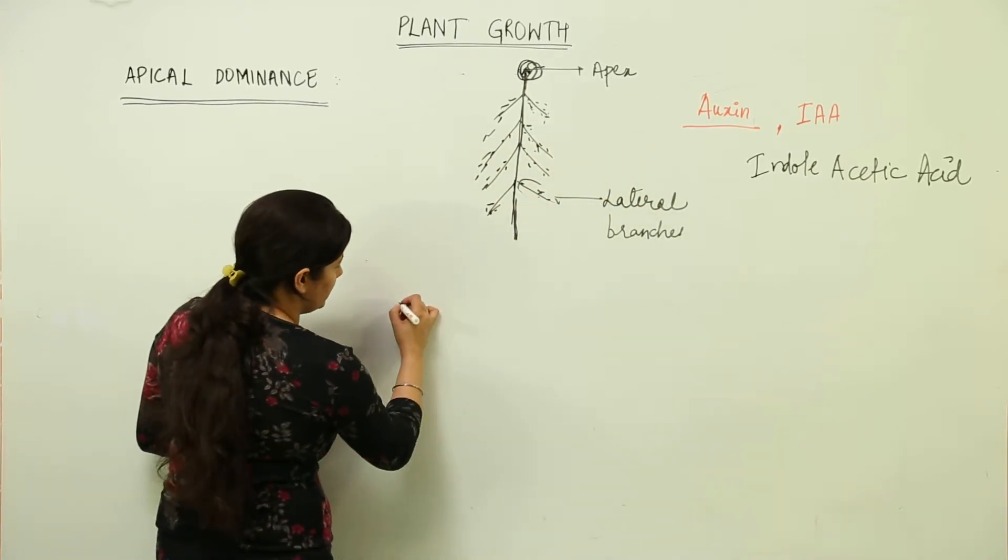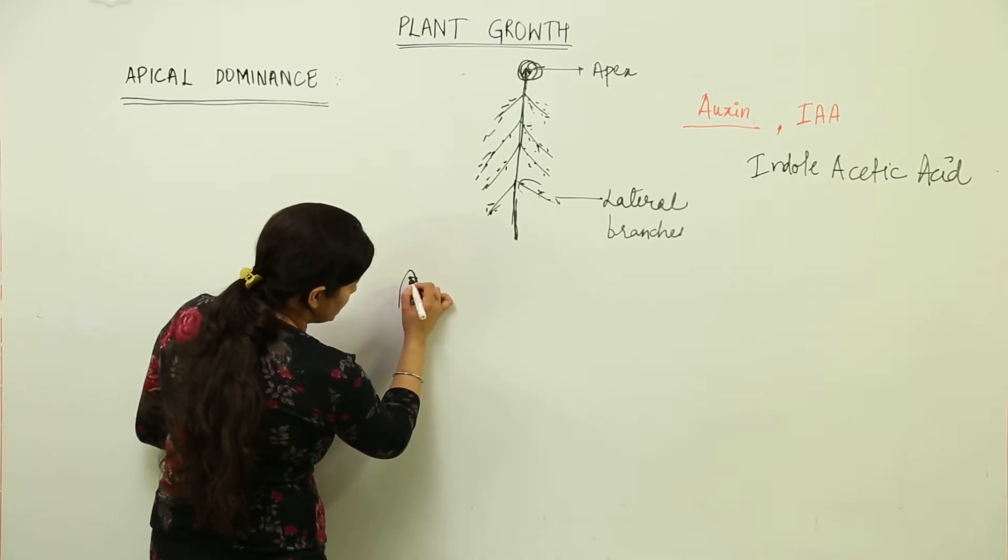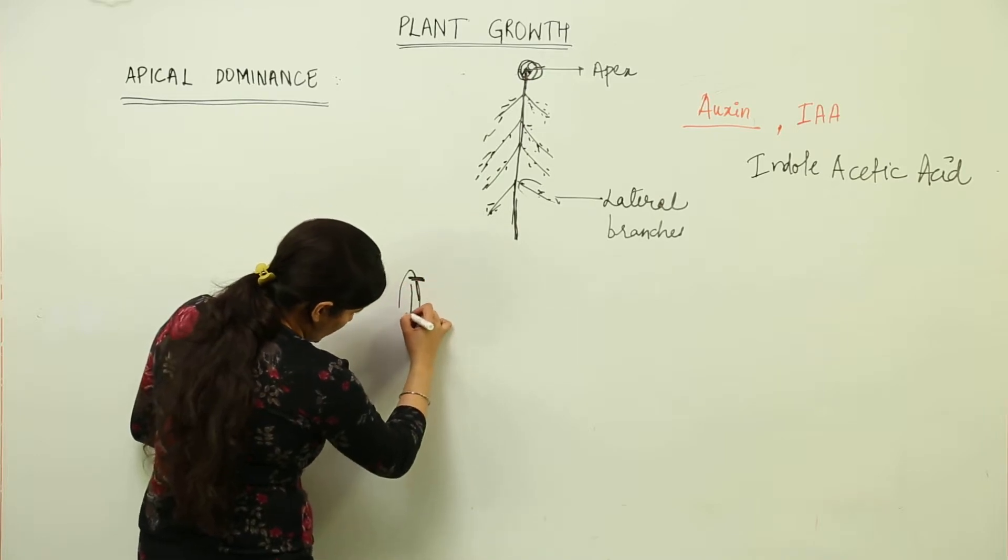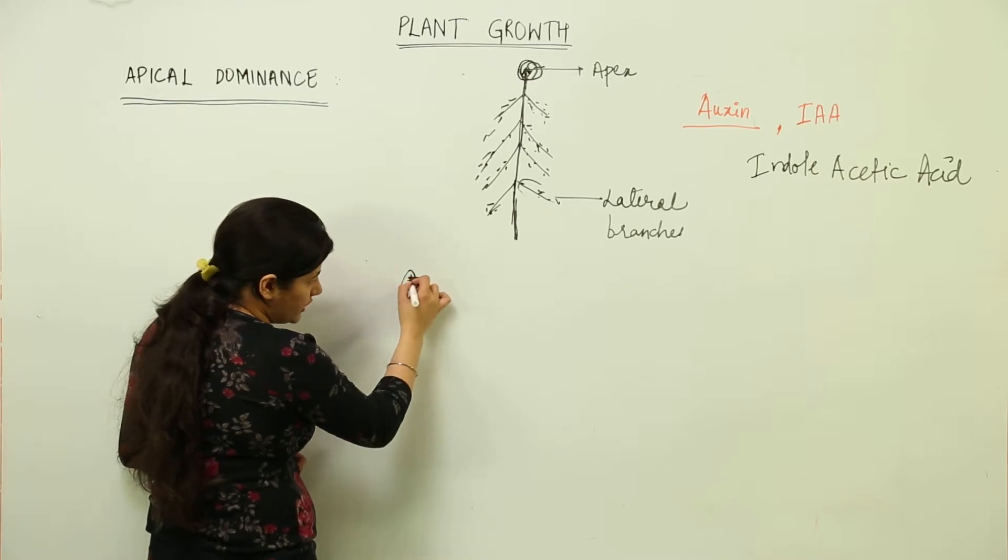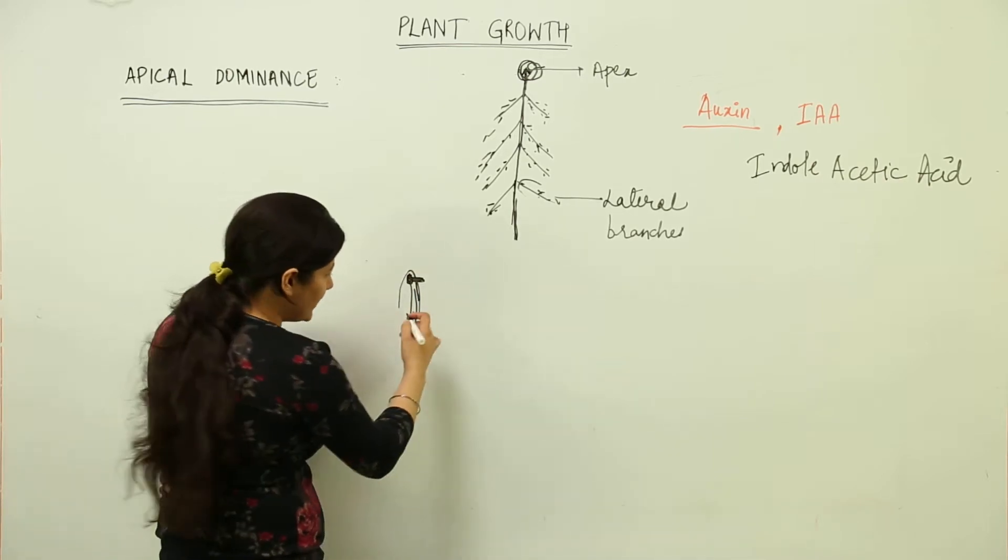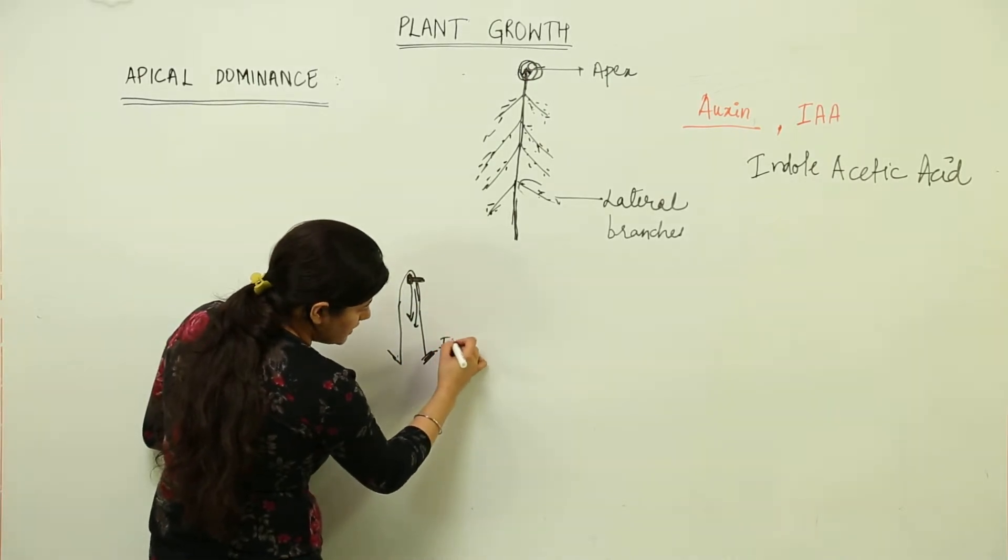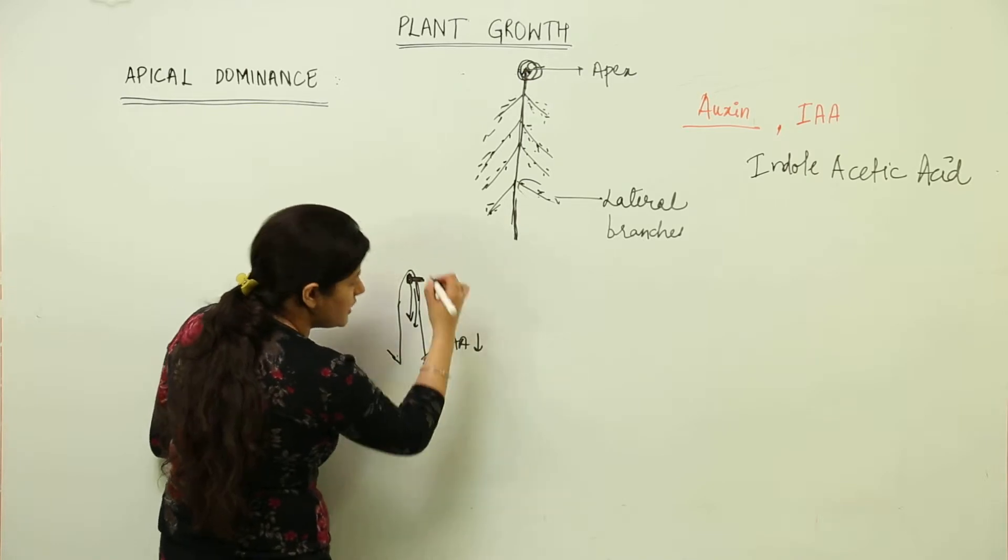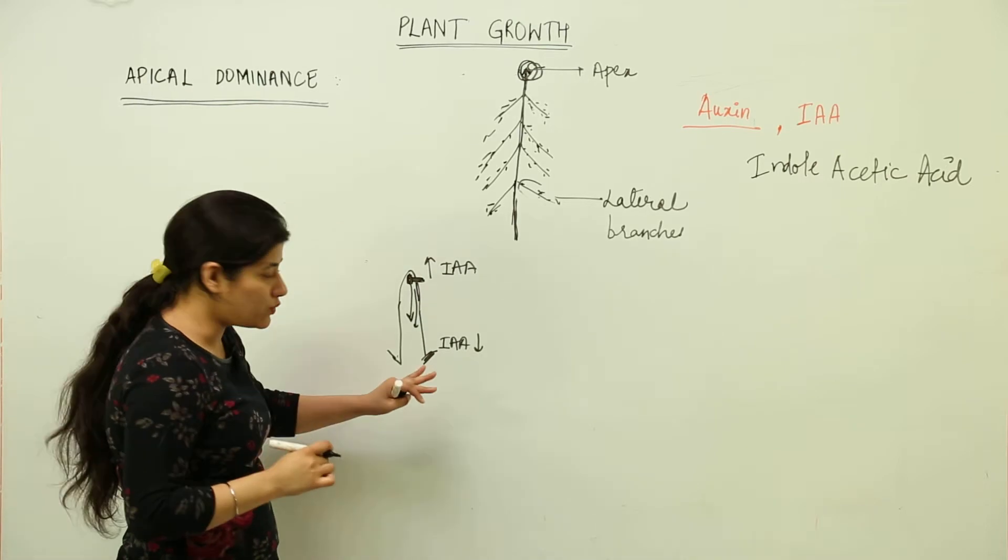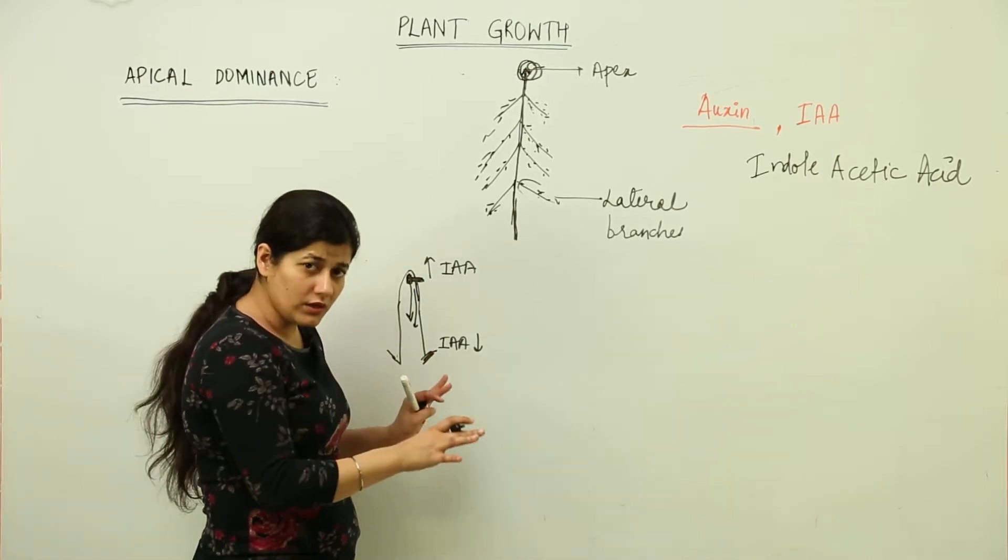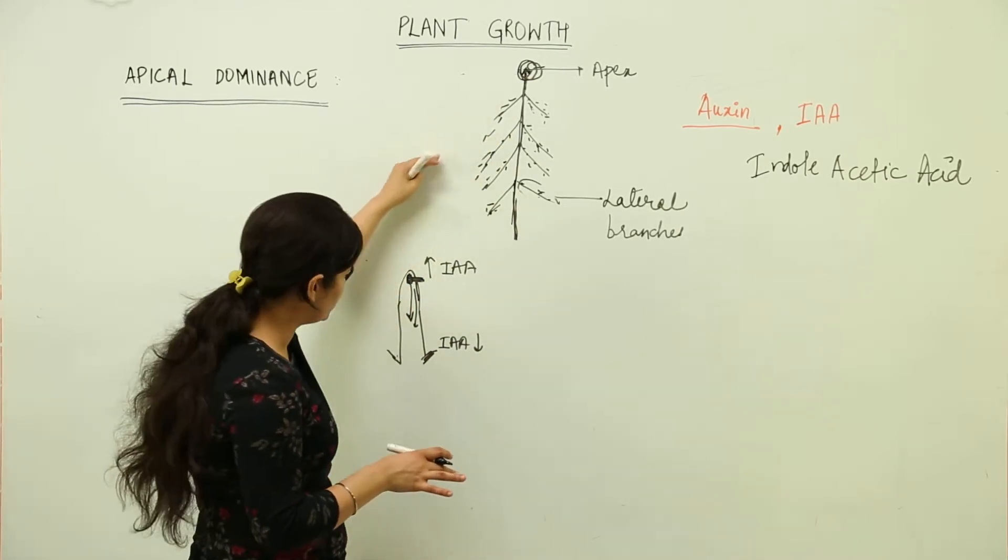You might have been knowing the bioassay of auxin - the auxins are present in the shoot apex. They show the vertical growth downwards. The auxin concentration at the shoot apex is such that in these axillary buds, the IAA concentration is lower in comparison to IAA concentration at the shoot apex. That is why the lateral branches grow at lesser speed as compared to the main branch - the vertical growth.